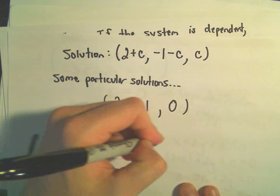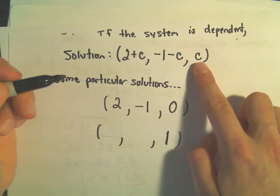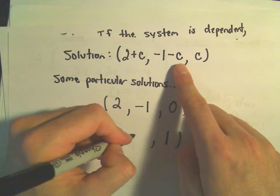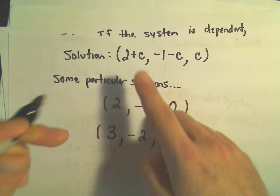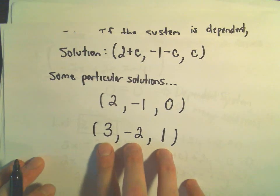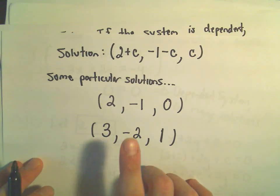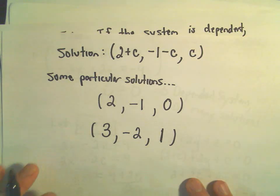Likewise, again, you know, pick your favorite value for c. Maybe we let c equal 1. Well, then we would get negative 1 minus 1, which would give us negative 2. We would get 2 plus 1, which would be 3. That would be another solution to our system of equations. Go back to the very original problem. Plug in x equals 3, y equals negative 2, z equals 1. You'll get another solution. You know, so on and so forth.